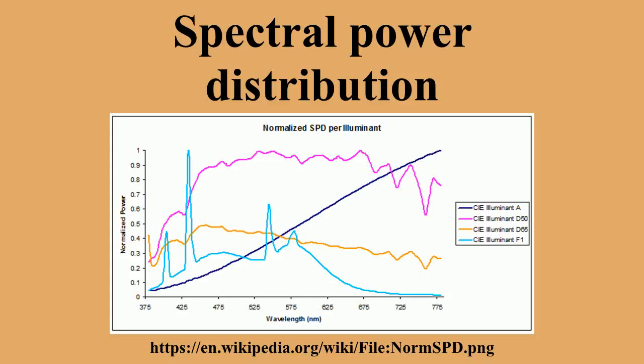Source SPD and color appearance: the human visual response relies on trichromacy to process color appearance. While the human visual response integrates over all wavelengths, the relative spectral power distribution will provide color appearance modeling information, as the concentration of wavelength bands will become the primary contributors to the perceived color.